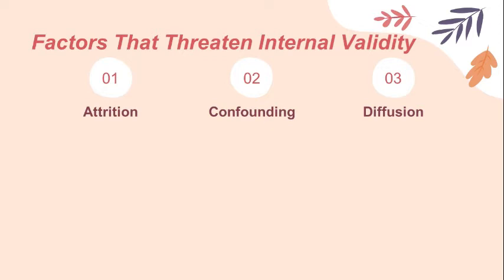The third is diffusion. This refers to the treatment in a study spreading from the treatment group to the control group through the groups interacting, talking with, or observing one another. This can also lead to another issue called resentful demoralization, in which a control group tries less hard because they feel resentful over the group that they are in.